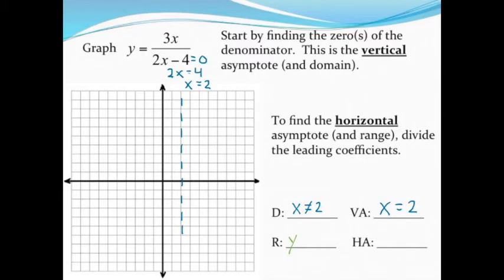So that tells me my range. y can be all the real numbers except three halves. And it also tells me the equation of my horizontal asymptote. y is equal to three halves, or 1.5. So if I draw that in, I'll count up one, and then a little bit more, about halfway. And that's going to be the equation of my horizontal asymptote.